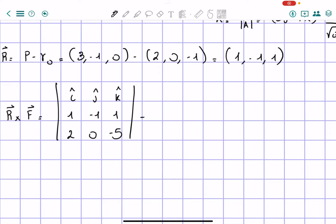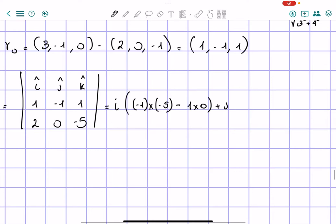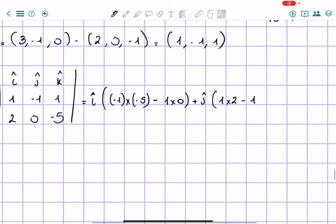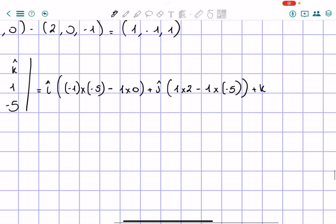So now, i hat is going to be negative 1 times negative 5, I'm going to write the i, it's just easier to read, minus, then we're going to have 1 times 0, plus j hat, which is going to be equal to 1 times 2, minus, we're going to have 1 times negative 5,